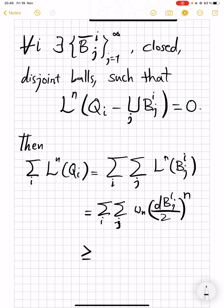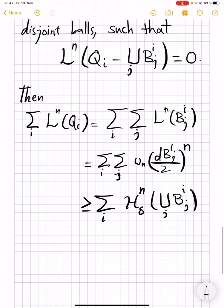And this one is bigger than or equal to... So, union of b_j's... So here's important. Union of b_ij's. Freeze i and do union of b_ij's. Of course, covers itself. And this summation, then by definition, is an upper bound for the H^n of the union of b_ij's j. And because every ball has diameter less than delta, this is actually an estimate for H^n_δ.